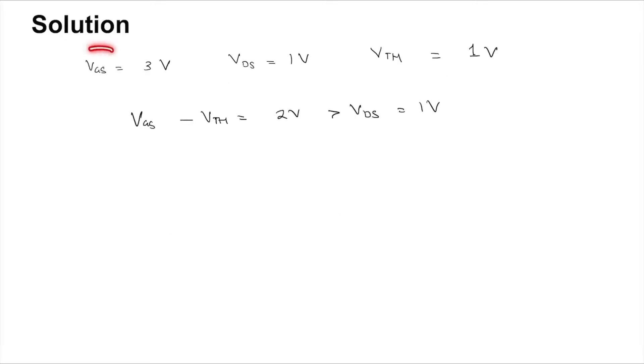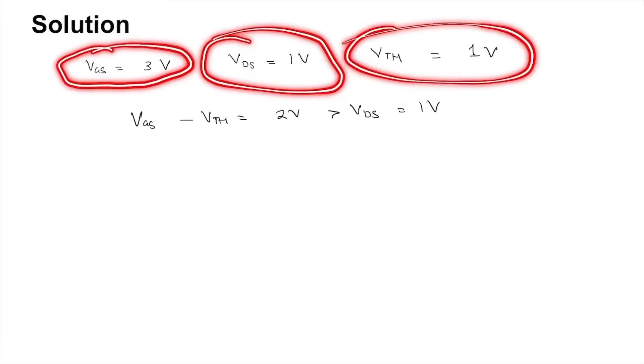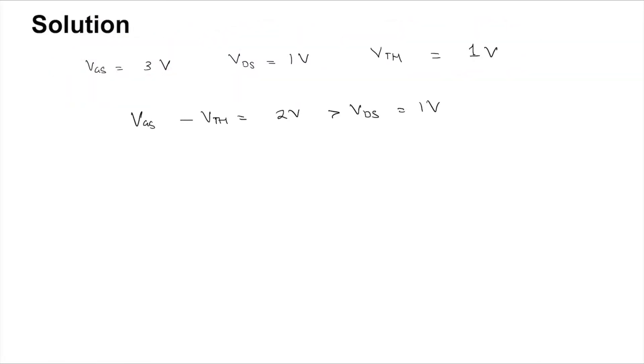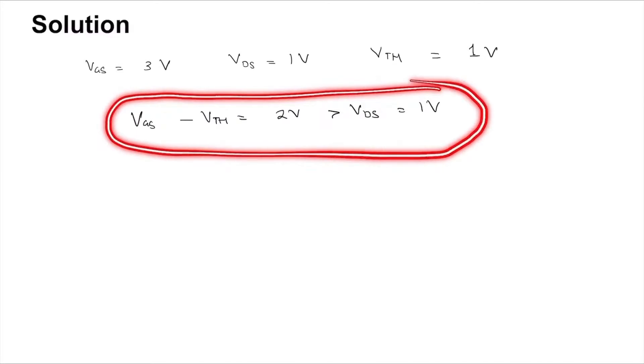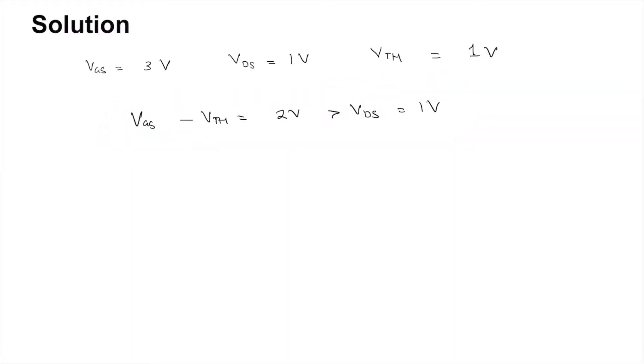So we are given the VGS value of 3 volt, VDS of 1 volt, and VTH of 1 volt. VGS minus VTH is 2 volt, which will be greater than VDS of 1 volt. What does this mean? It means that the transistor is in the linear region.